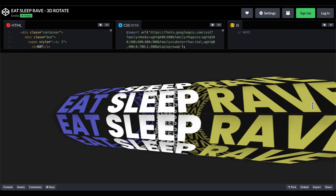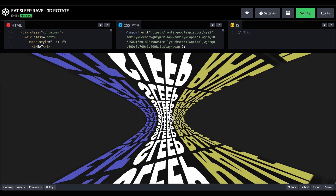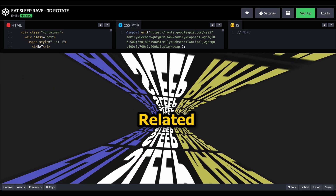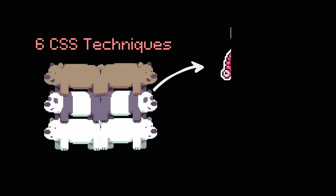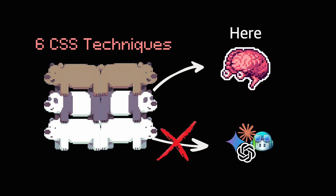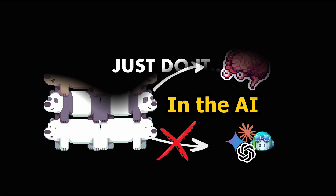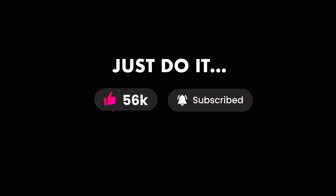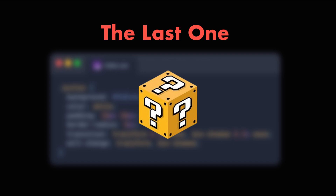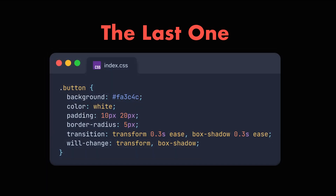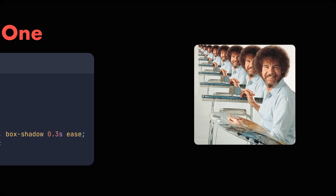This is built entirely with CSS. Today I'm going to share 6 CSS techniques that I've never seen in AI-generated code. Keep in mind that the last one is called will-change, so we will see about that in just a minute.